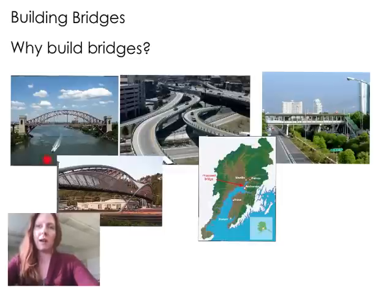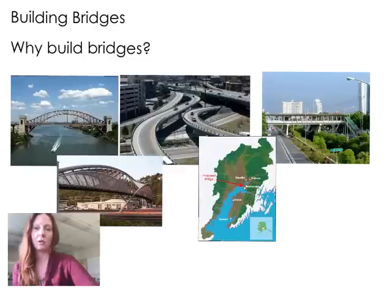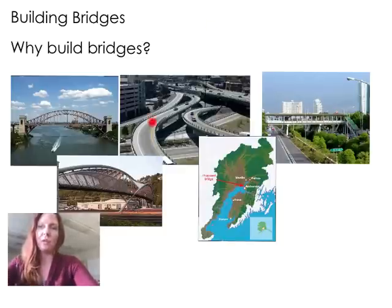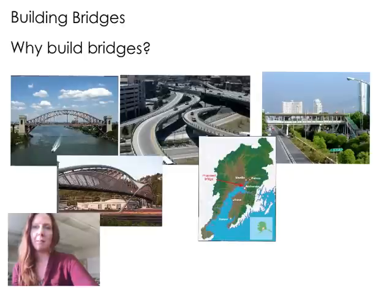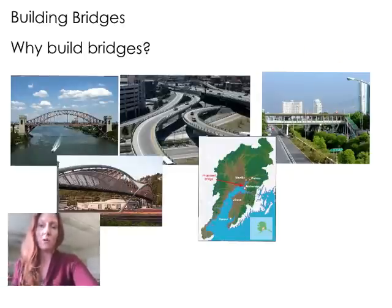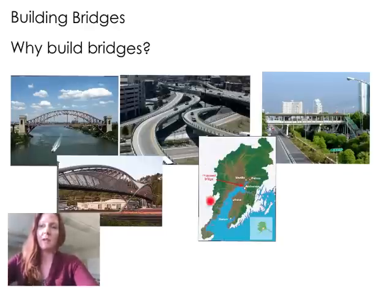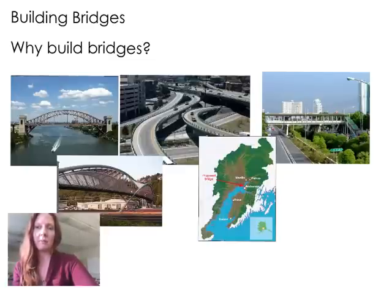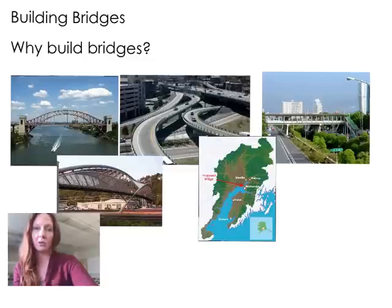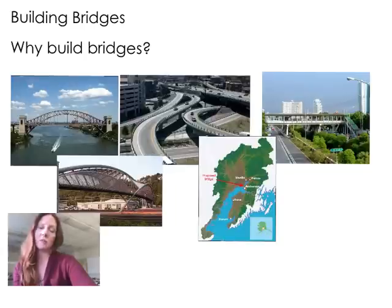Some obvious ones are bodies of water that you need to cross easily and quickly — having boats or ferry boats tends to be more time consuming, expensive, and maybe dangerous. Traffic flow in larger cities: often they build overpasses and bypasses so that they don't have to have traffic lights. These are pedestrian walkways, so there's safety and efficiency for building pedestrian bridges. This picture shows the proposed Kinnick Arm Bridge, which is meant to alleviate traffic congestion coming from the valley into Anchorage. So lots of different reasons — usually it's to get from one place to another over some sort of barrier.